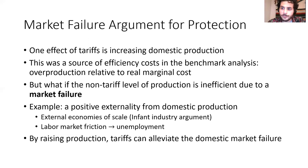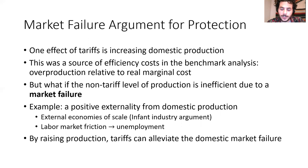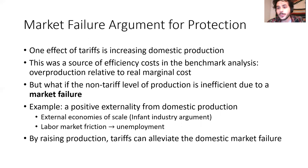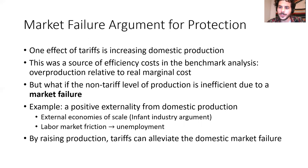A couple of examples: one would be external economies of scale. If one firm produces more, this is going to be beneficial for all other firms. But that's an externality — this firm isn't going to take into account the beneficial effect it has on the industry as a whole and national income. This is quite similar to the infant industry argument. With external economies of scale, firms are unlikely to overcome competition with developed industries themselves because they can't capture the external effects of their scale. You can also think of labor market frictions that lead to unemployment as another type of externality — more domestic production could encourage full employment if there's some friction preventing it otherwise.